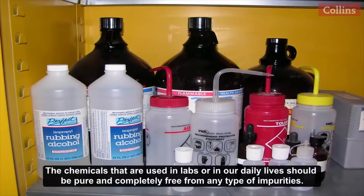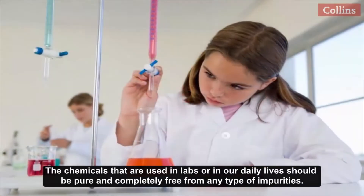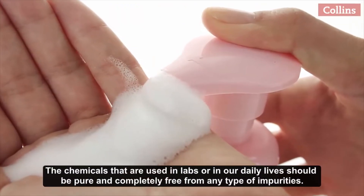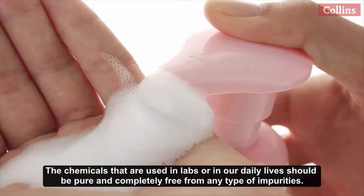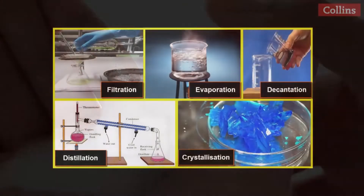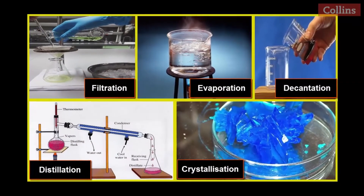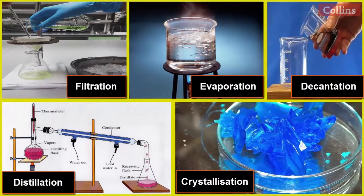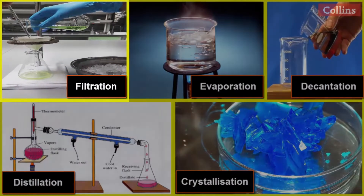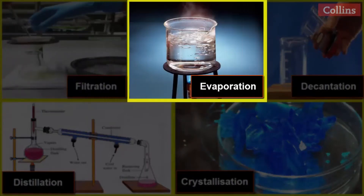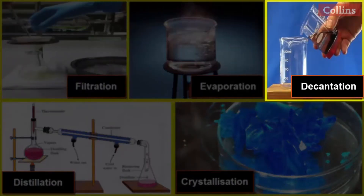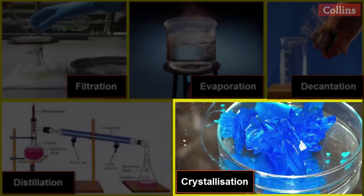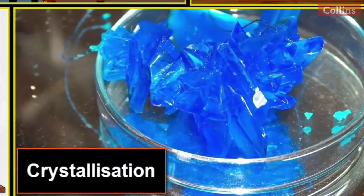Crystallization. The chemicals used in labs or in our daily lives should be pure and completely free from any type of impurities. Depending upon the nature of impurities, different techniques of separation are used to get a pure component, such as filtration, evaporation, decantation, distillation, and crystallization.